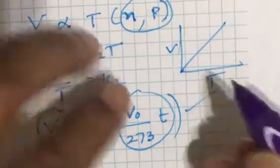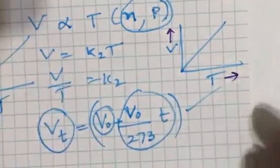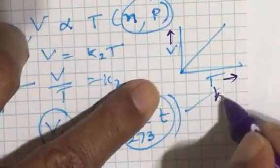This graph volume versus temperature is a straight line where the temperature is in Kelvin scale.